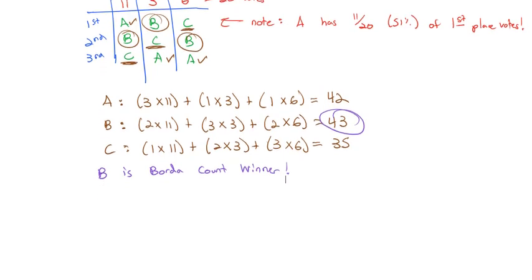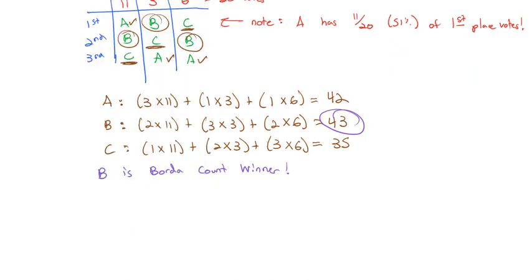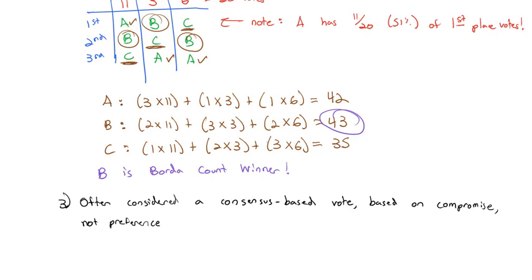This is probably why Borda Count is often considered a consensus-based vote, based on compromise, not preference. So more people would prefer A, but to compromise for the people that really don't want A, we all compromise on B, being the Borda Count winner.